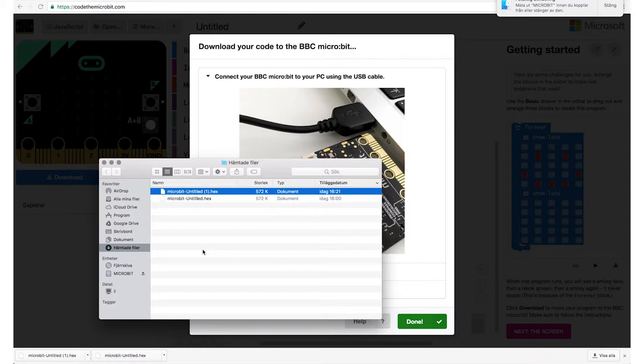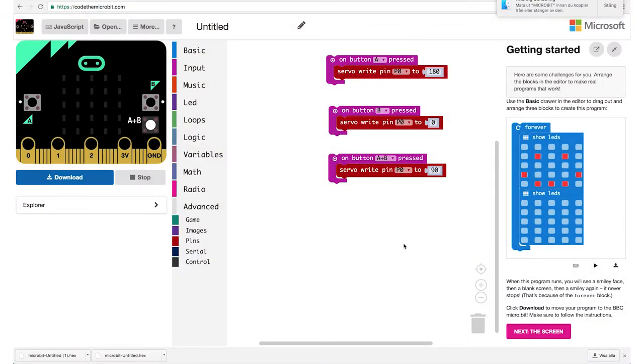I see 'servo write pin', so I'll connect that. This block means you put your servo to a certain position. You can see it says 180—you can see this as 180 degrees. I'll copy this one and change the button to B, and then I want it to be the opposite, so 180 would be zero. We'll change that to zero position.